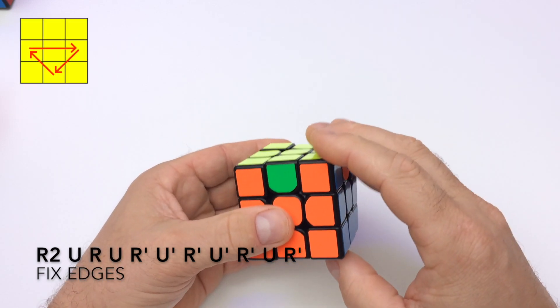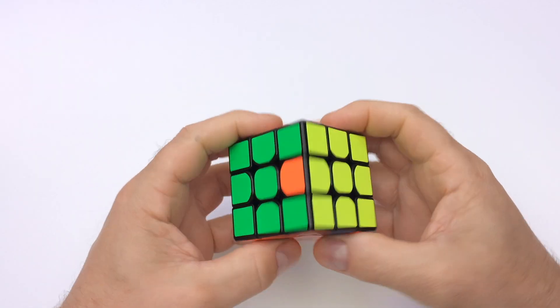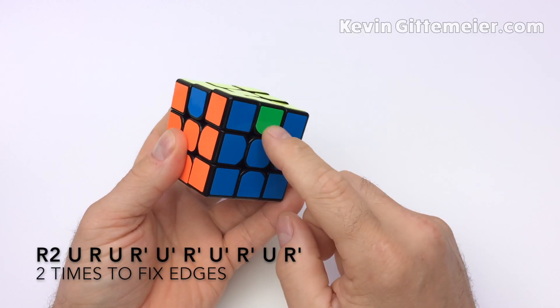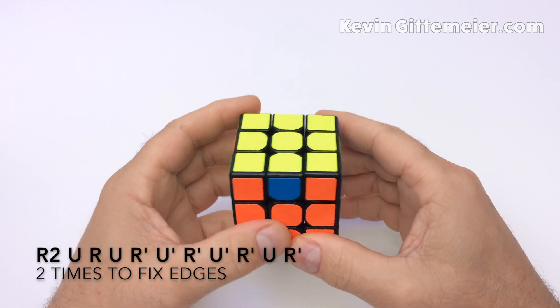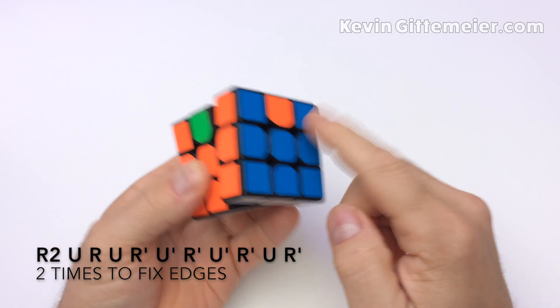This one goes here, I do it once. We perform the algorithm just once. Now, if the solved side is on the back and this edge piece does not go to the right, we have to do it twice. So, and then now this piece does go there.